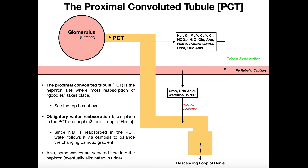Remember what obligatory water reabsorption is. Whenever we absorb sodium from the tubules back into the blood, water actually follows it. We really don't have to do anything for water to be reabsorbed. Especially in the proximal convoluted tubule, we're concerned about reabsorbing these goodies like glucose, amino acids, some small proteins or peptides, vitamins, and then of course ions. When we absorb things like sodium from the tubule back into the capillary system, water is just obliged to follow - water follows salt.